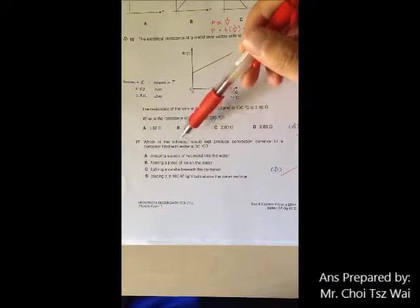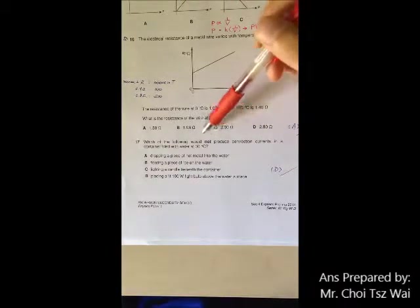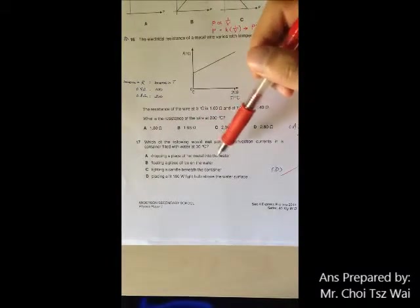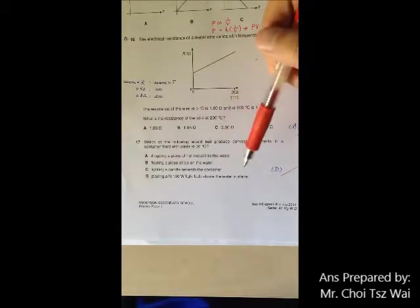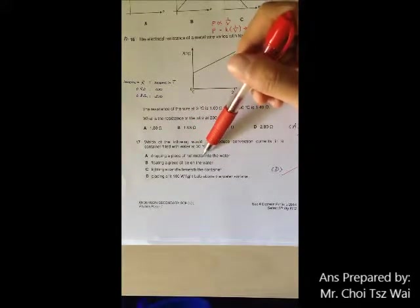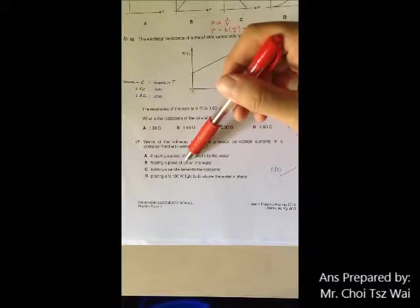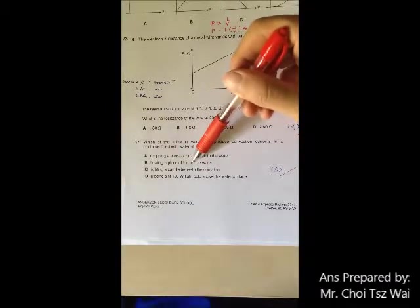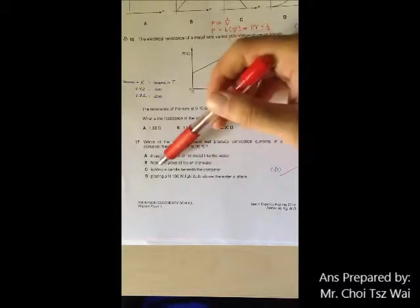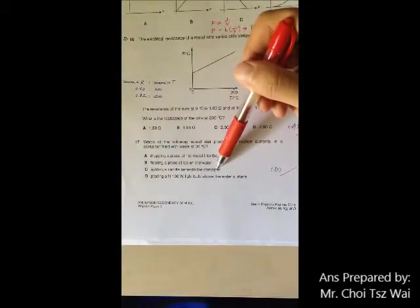Question 17. Which of the following would not produce convection current? So the trick here is that hot air, a hot fluid will always rise vertically or cold fluid will sink vertically. You have to assume that. So if you drop a hot metal into the water, assuming that the water sinks to the bottom, so the heat source is at the bottom, the hot fluid will rise and the circulation will form. If you float a piece of ice, the ice being cooler will cause the fluid to sink. And then it pushes the warmer fluid up and therefore there will be convection circulation. Again, you light a candle below the container. The heat source is below, hot fluid rise, circulation will form.